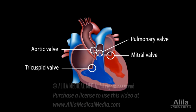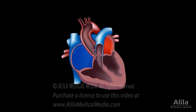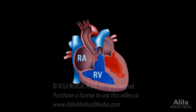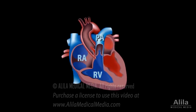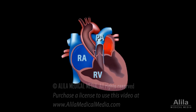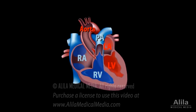The four heart valves ensure one-way blood flow through the heart. Oxygen-poor blood flows from the right atrium to right ventricle to pulmonary arteries. Oxygen-rich blood moves from the left atrium to left ventricle to the aorta.